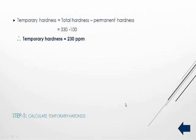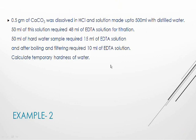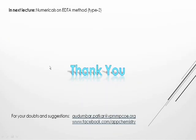Now temporary hardness is the difference between total hardness and permanent hardness. So total hardness is 330 ppm minus permanent hardness of 100 ppm, that will give you 230 ppm. So by using these 5 steps you can calculate total, permanent and temporary hardness. Here is one example for practice — follow the steps and calculate temporary hardness of the water sample. That's it for now. Thank you very much and see you next time.